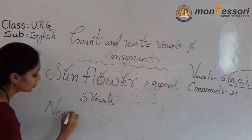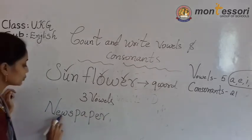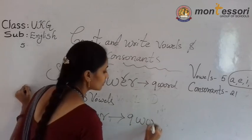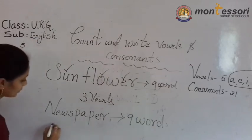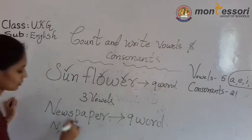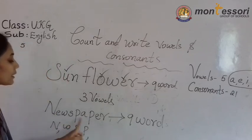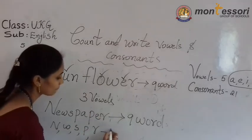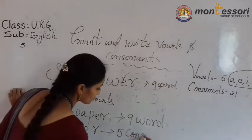Next: N, E, W, S, P, A, P, E, R — Newspaper. 1, 2, 3, 4, 5, 6, 7, 8, 9 — this is a nine-letter word. Now, just select the consonant letters yourself. N — consonant. E — vowel. W — consonant. S — consonant. P — consonant. A — vowel. P — already repeated, no need. E — vowel letter, no need. R — consonant. 1, 2, 3, 4, 5 — five consonant letters.